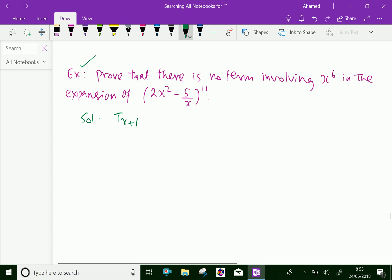Now, the solution: let T_(r+1) be the term involving x^6. T_(r+1) equals 11Cr into the first term (2x²)^(11-r) into (-5/x)^r, which equals 11Cr times 2^(11-r) times (-5)^r.